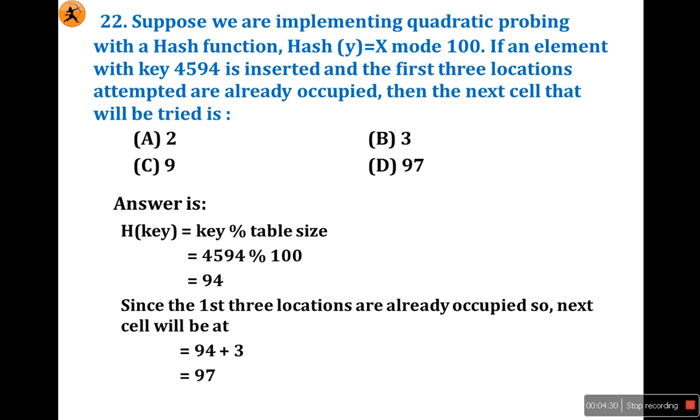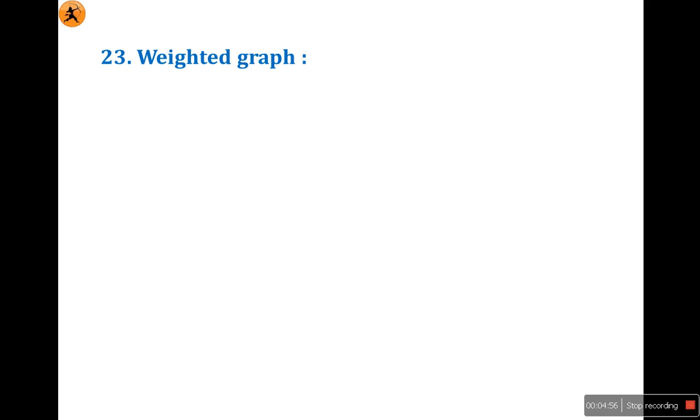Given Hash(y) = x mod 100, just substitute the key value mod 100, we will get the remainder is 94. Since the first 3 locations are already occupied, 94 plus 3 is 97. I hope this clarifies how to solve this question. If you have any query, just mail me.